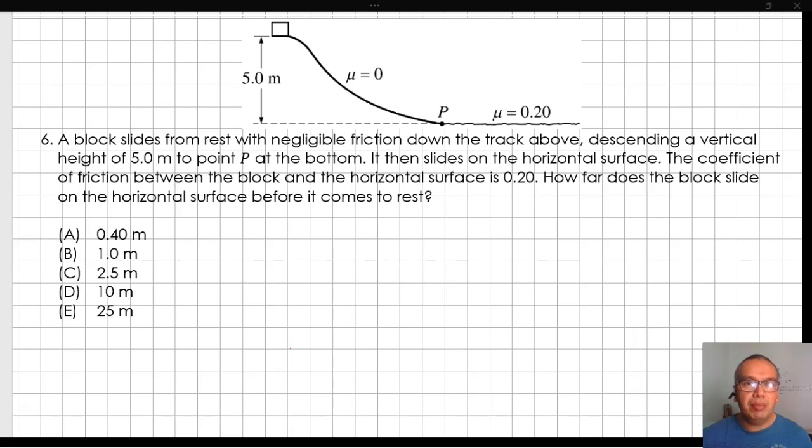From the initial position that we can call point A to point B, there are no non-conservative forces. Therefore, the total mechanical energy is conserved. That energy is equal to the initial gravitational potential energy, mgh.